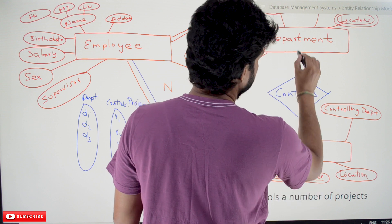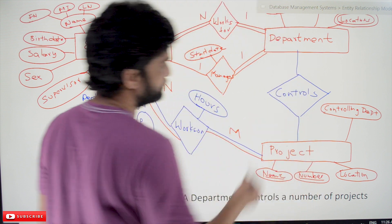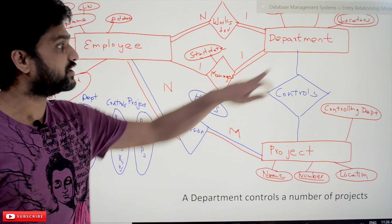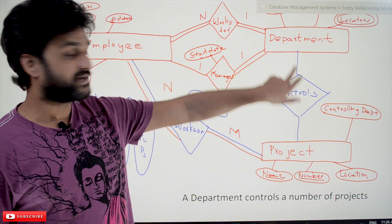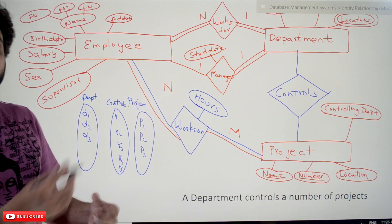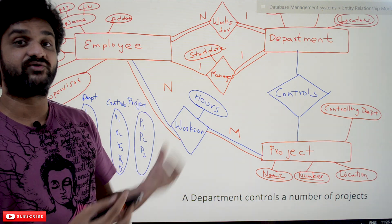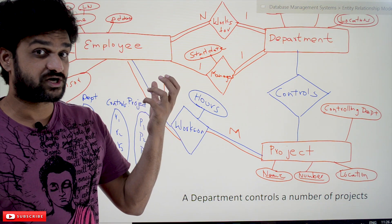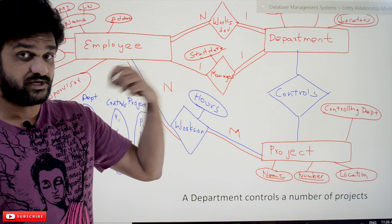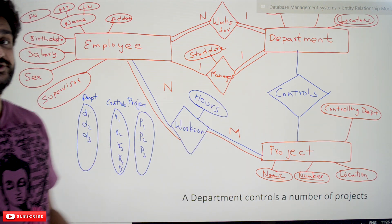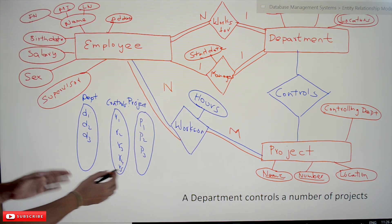We add the 'controls' relationship connecting department and project on the ER diagram. They are not partial participants just yet — let's now explore the concepts of cardinality ratio and participation for this relationship.